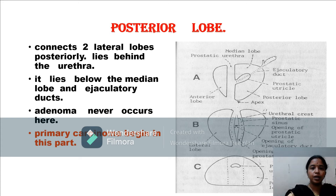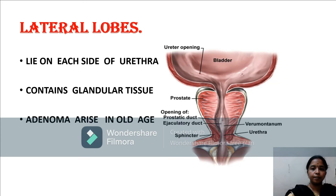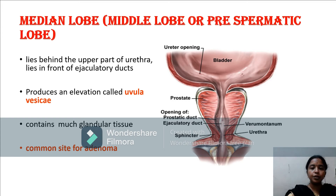The posterior lobe connects the two lateral lobes posteriorly, lying behind the urethra and below the ejaculatory ducts. Adenoma does not arise in this area — it is the primary carcinoma site. The lateral lobes lie on each side of the prostatic urethra and contain more glandular tissue; adenoma arises in the periurethral zone. The median lobe lies behind the upper part of the urethra and in front of the ejaculatory ducts. It produces an elevation near the neck of the urinary bladder called the uvula vesicae. It contains more glandular tissue and is a common site for adenoma.